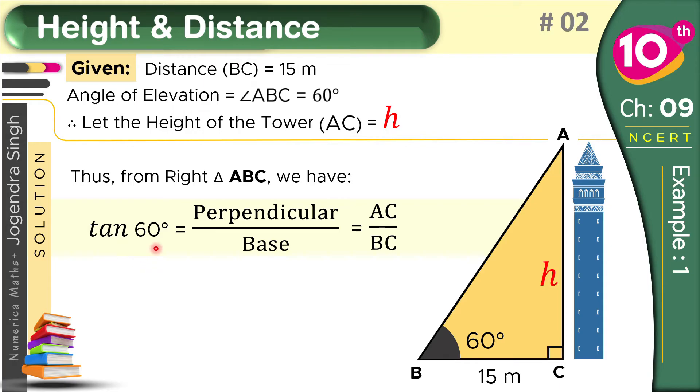So according to this, the value of tan 60 degrees is root 3. And AC and BC we will carry from the figure, which are H and 15. So just replace all the things here. In place of tan 60 we have root 3. And AC becomes H, BC becomes 15.